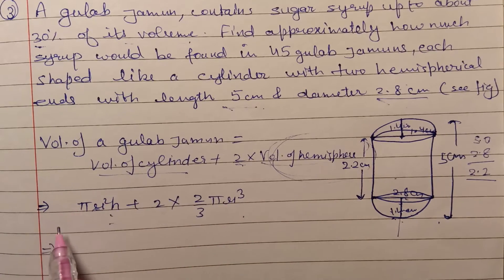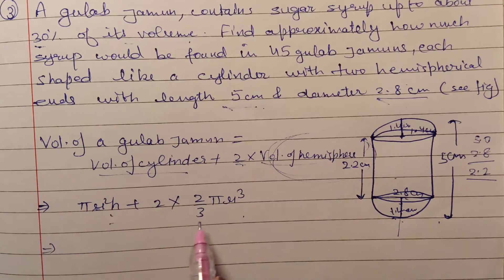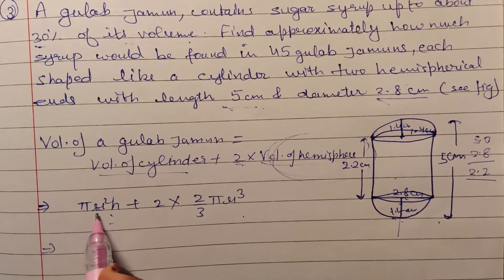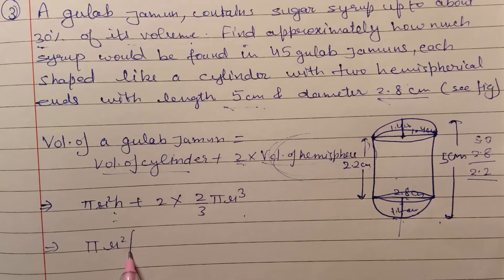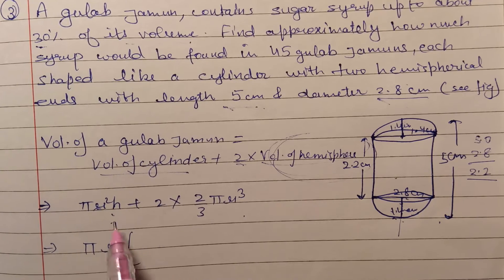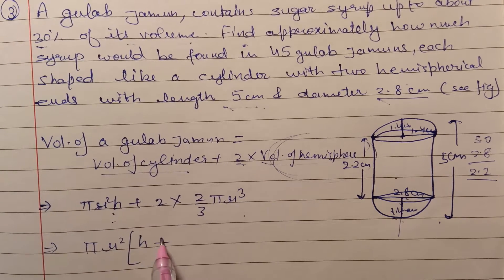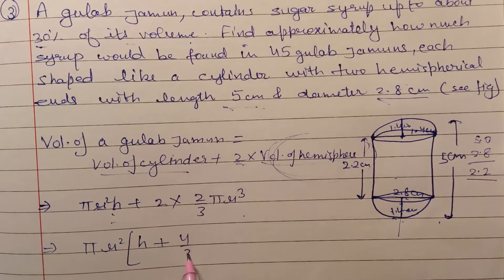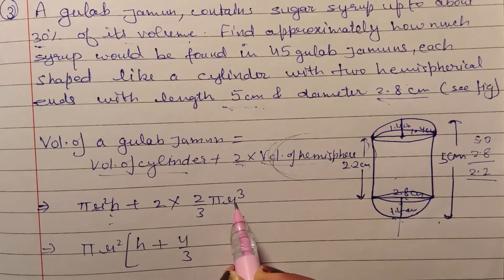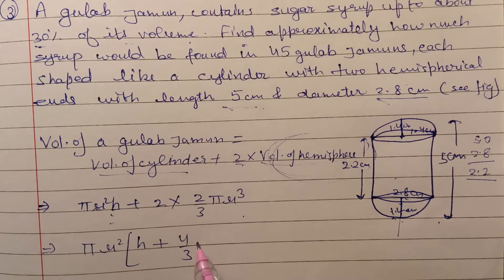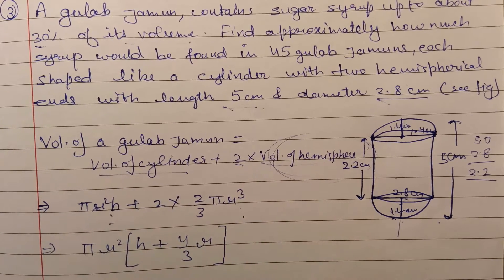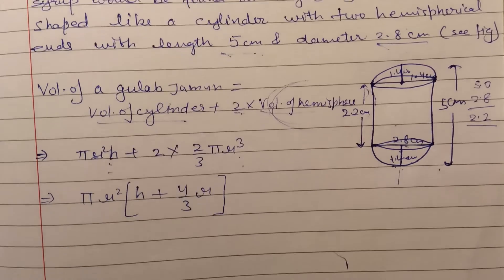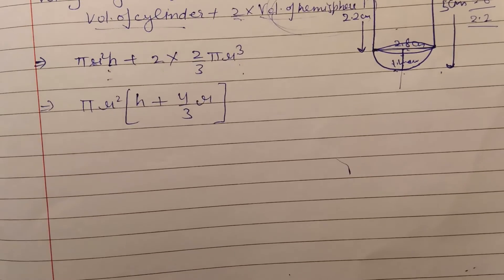इसे थोड़ा सा simplify करते हैं — πr² बाहर आ रहा है। Take common out: πr² × (h + 4/3 r)। अंदर height बची और 4/3 r बचा — r cube था, r² बाहर गया तो एक r अंदर बचा। अब इनकी values put कर दो।